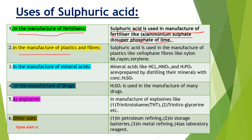Number 2: In the manufacture of plastics and fibers. Sulfuric acid is used in the manufacture of plastics like cellophane, and fibers like nylon 66, rayon, and perylene.